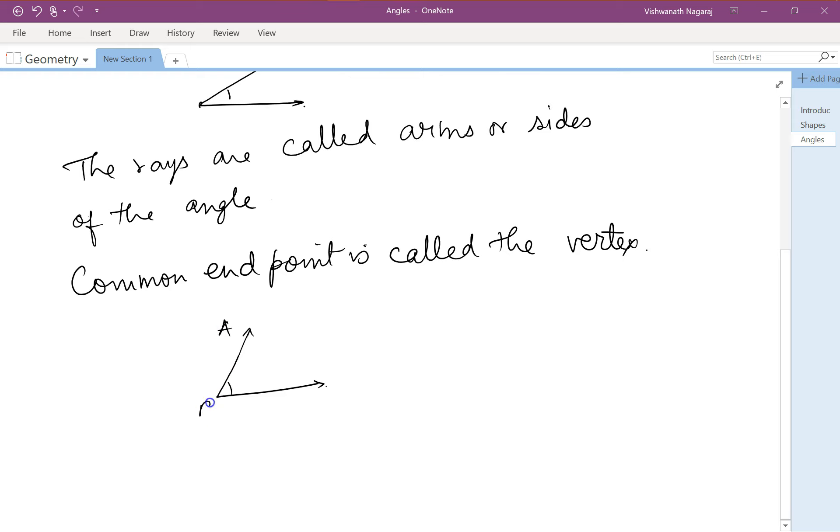So ABC, the angle is formed at B, at the vertex. We can refer to this angle using this symbol angle B. We can also refer to it by saying angle ABC. Now remember the vertex will always be in the middle.